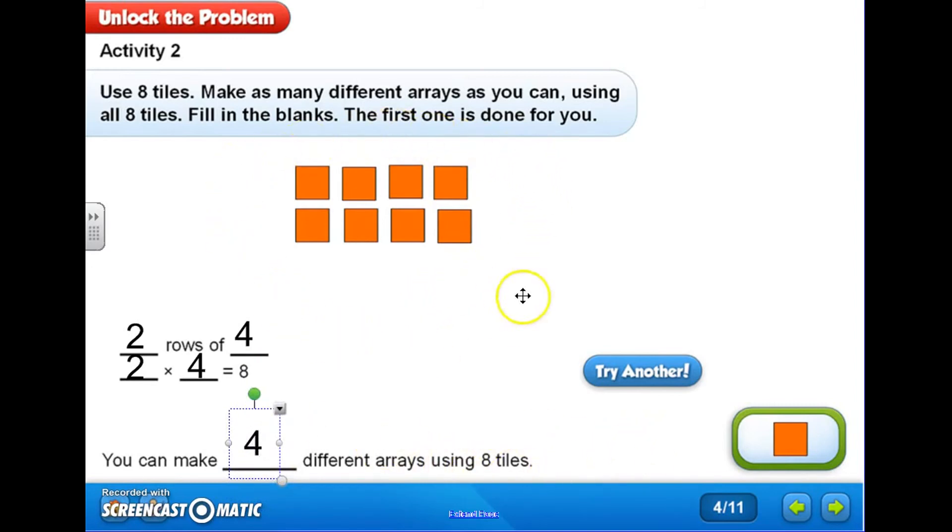So today we learned that an array is a picture of objects arranged in equal rows and columns, and that we can make an array to match a number sentence so that we can easily figure out the product. You can figure out the product three ways: you can individually count up all the tiles counting by ones, you can add up the rows together, so four plus four would give me eight, or you could skip count by whatever number is in your row: four, eight.